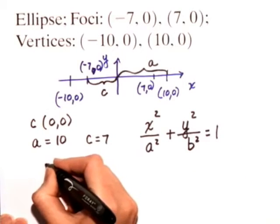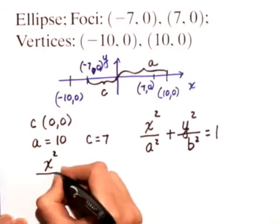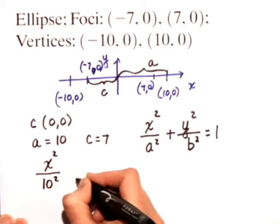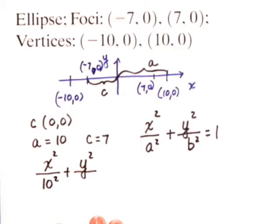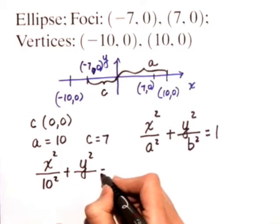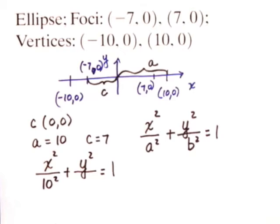So in this case, I have x² over 10² plus y² over... well, we don't have b yet, so we don't know what b² is yet. I'll leave that blank for a minute and set it equal to 1.